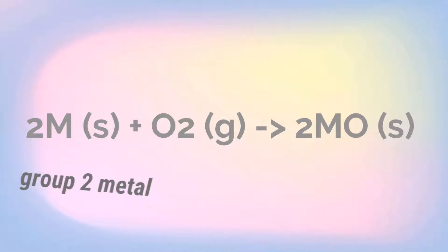When group 2 metals react with oxygen, they follow this general formula: 2M(s) + O2(g) -> 2MO(s), with M being the group 2 metal. They produce metal oxides which are in the form of white solids.